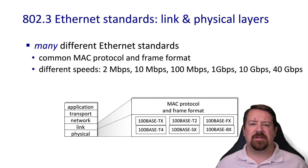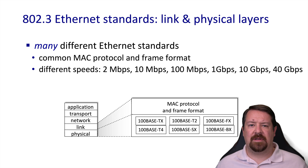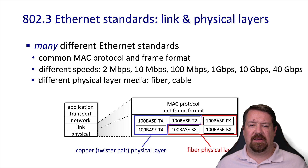Ethernet's MAC protocol is CSMA/CD with binary backoff. There have been many different Ethernet standards over time, because Ethernet has supported many different speeds and physical media. The standard covers not only the framing and protocol but the parameters of the physical interfaces — from the original coaxial cables with physical taps, to the common RJ45 ports with four copper twisted pairs, to single-mode and multimode fiber optics. We can differentiate standards by speed and medium, and those listed here are just for 100 Mbps — similar versions exist for 1 Gbps, 10 Gbps, 40 Gbps, and so on.